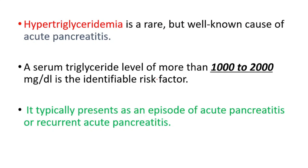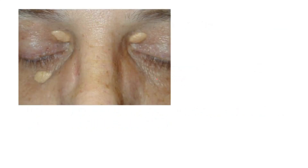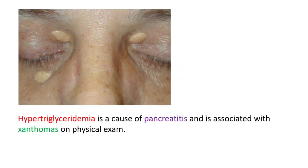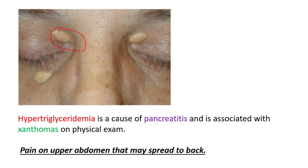It typically presents as an episode of acute pancreatitis or recurrent acute pancreatitis. It's a cause of pancreatitis, but it's also associated with xanthomas on physical exam, which you can see. It will present like pain in the upper abdomen that may spread to the back. If you see a patient with hypertriglyceridemia with this presentation, you should think pancreatitis.